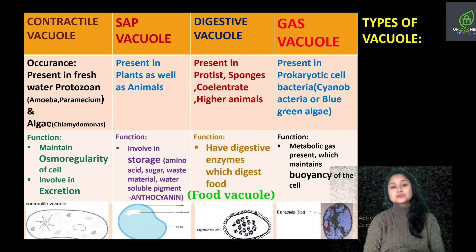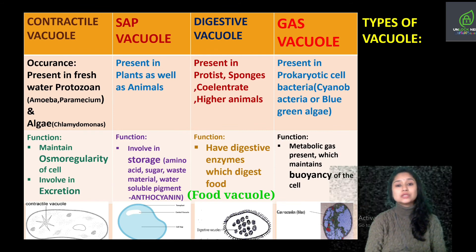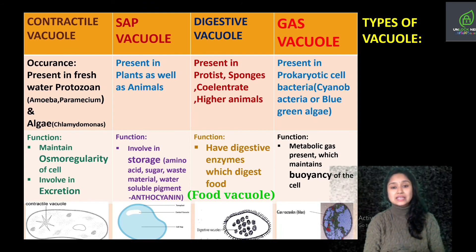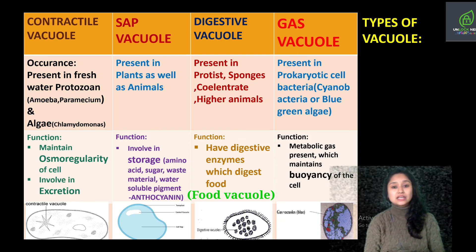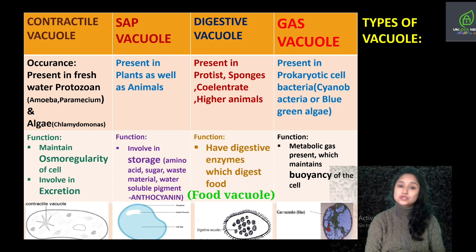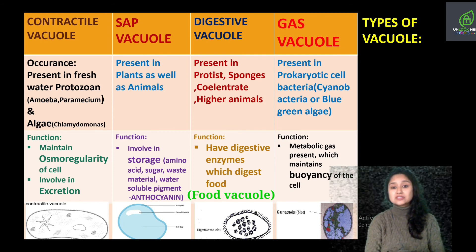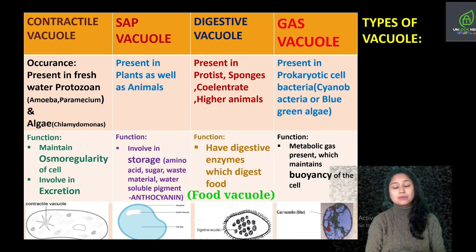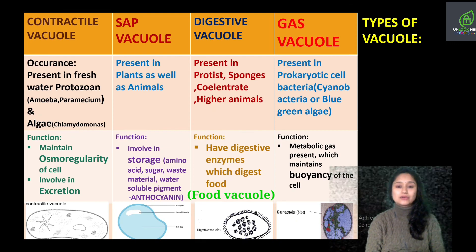So these were the different types of vacuoles: contractile vacuole, sap vacuole, digestive or food vacuole, and gas vacuole. Today we have ended all four endomembrane systems — we started with endoplasmic reticulum, then Golgi body, then lysosome, and today we have completed vacuole. In our next lecture we will be discussing about microbodies. Stay connected and stay tuned for our next lecture. Thank you and have a great day.